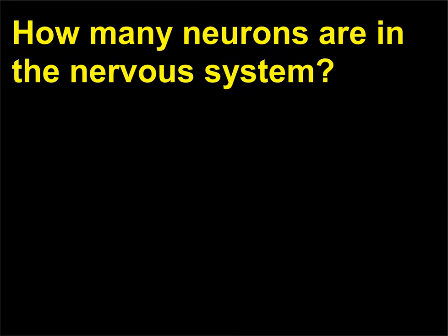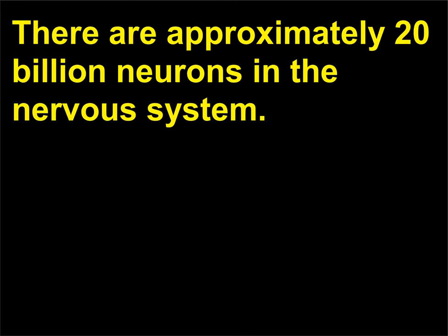How many neurons are in the nervous system? There are approximately 20 billion neurons in the nervous system.